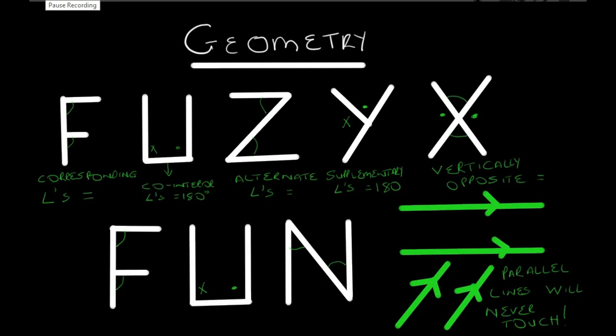So the first type of angle that we are going to look at is corresponding angles. Now with corresponding angles, you have a set of parallel lines. You'll see that this is parallel to that. Now, when you are looking for the corresponding angles, you look for the F shape.